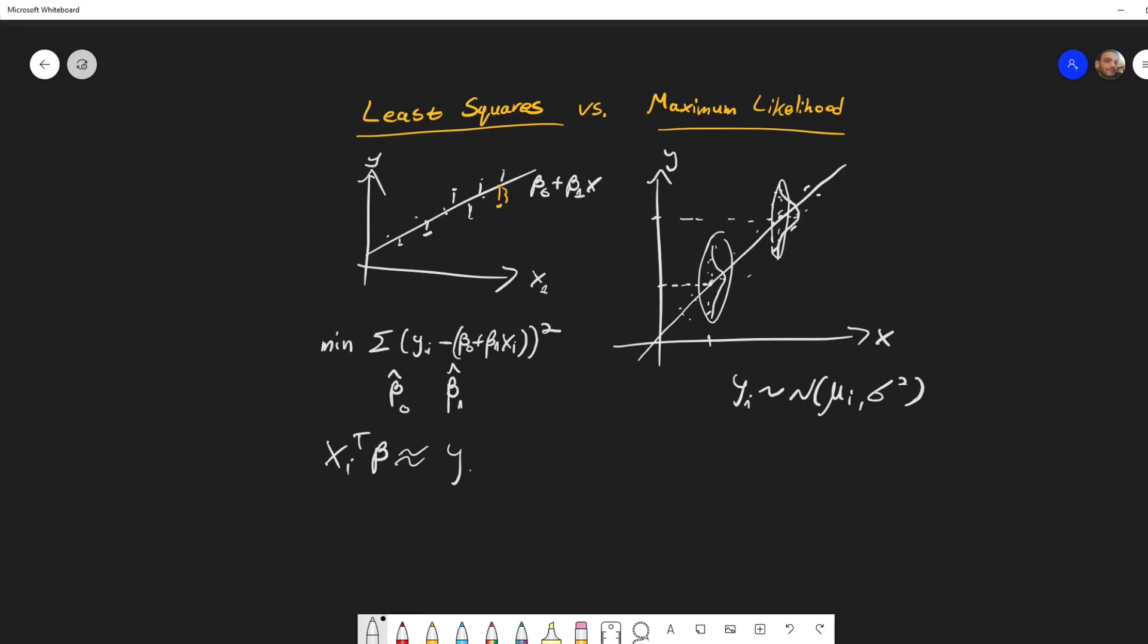And why is it that for the normal distribution, the least square and maximum likelihood is actually the same? Well, how do you compute the maximum likelihood? You say, for each y i, I have some probability of obtaining that y i. That probability is 1 over square root 2 pi sigma exponential minus 1 over sigma squared, sorry, y i minus mu i squared. This is the PDF of the normal distribution.